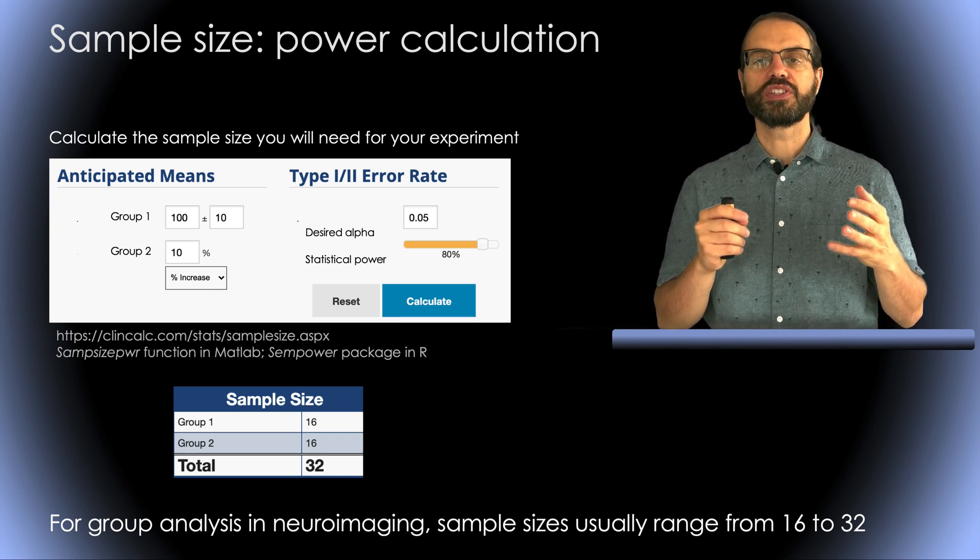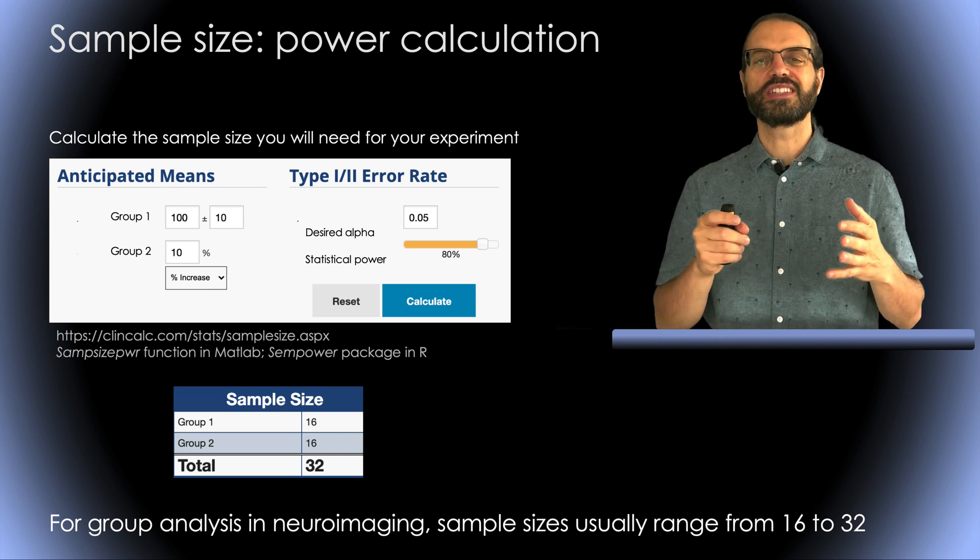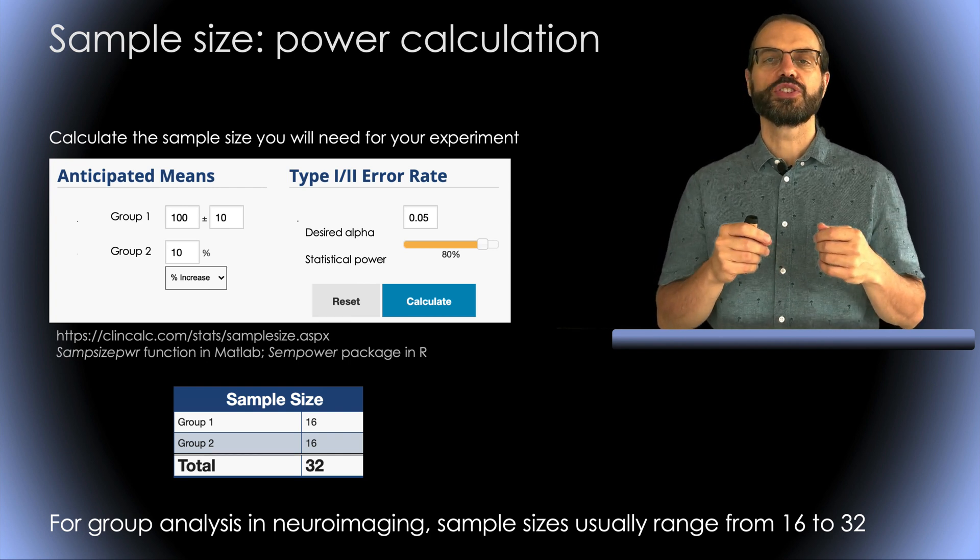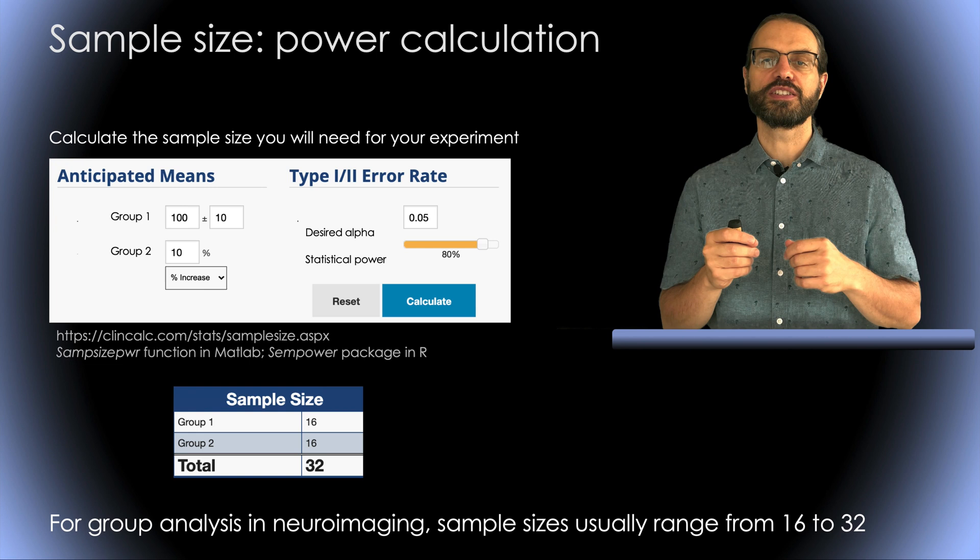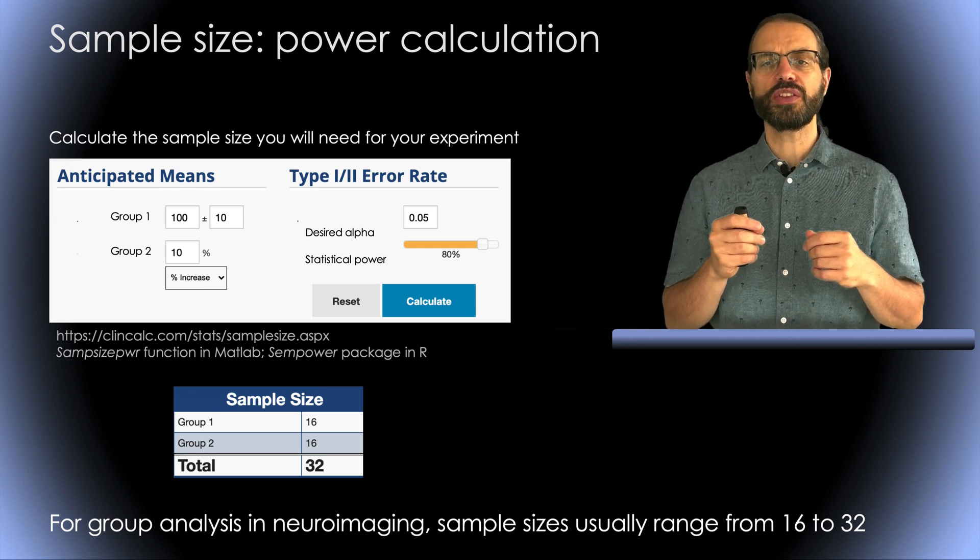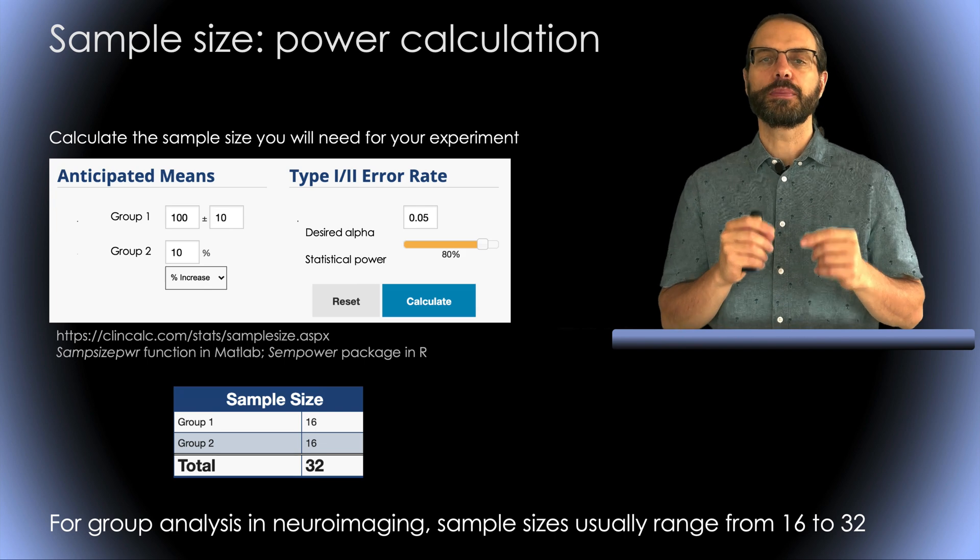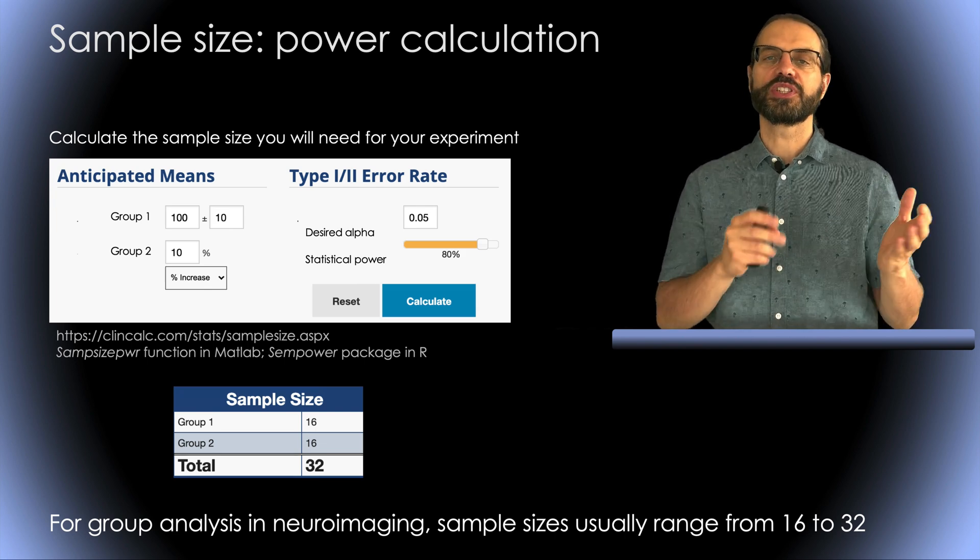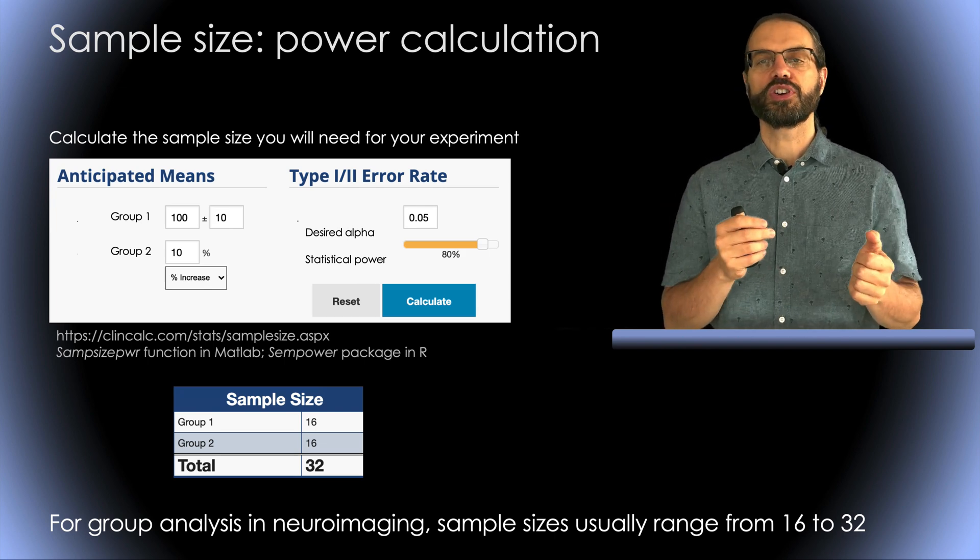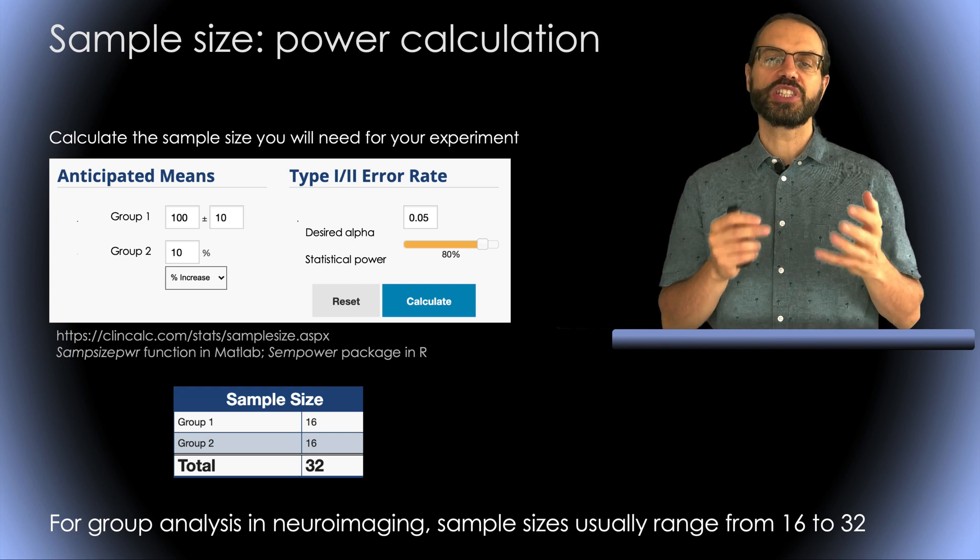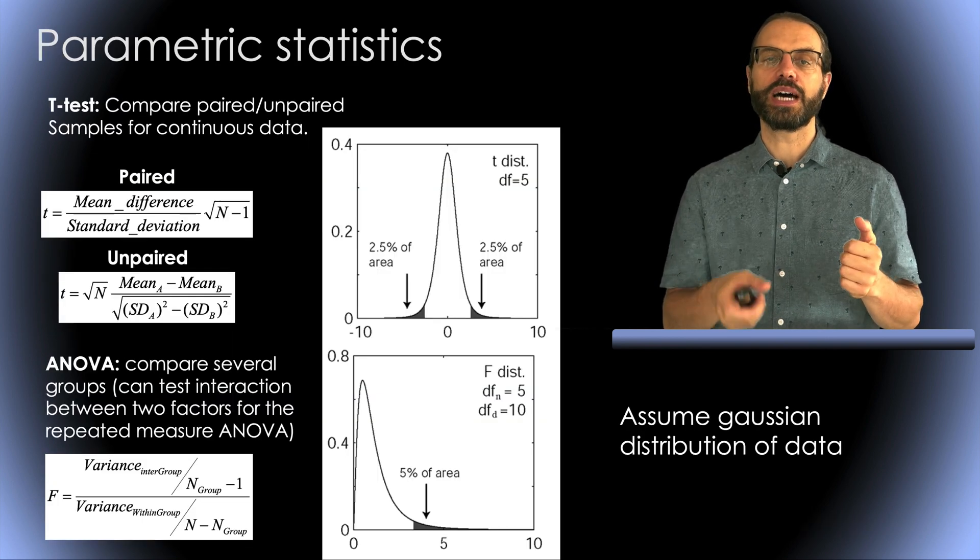This solution is not perfect because it uses parametric statistics assumptions for your data, so the measure can be biased, but it's a good start. Note that for group analysis in neuroimaging studies, sample sizes usually range from 16 to 32 participants, so if you have fewer participants, your study might be underpowered.